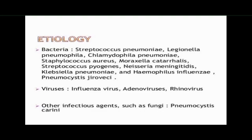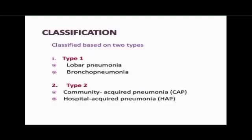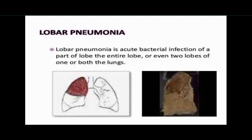Other infectious agents such as fungi, including Pneumocystis carinii, also cause pneumonia. The classification of pneumonia is based on two types: Type 1, which includes lobar pneumonia and bronchopneumonia, and Type 2, which includes community-acquired pneumonia (CAP) and hospital-acquired pneumonia (HAP).